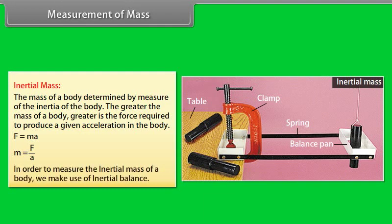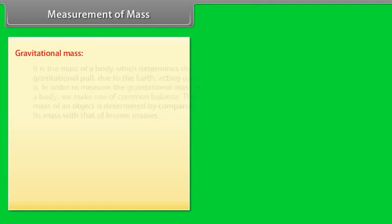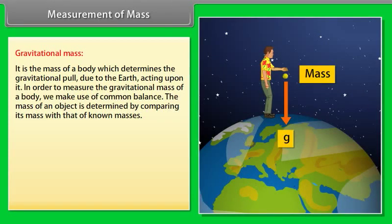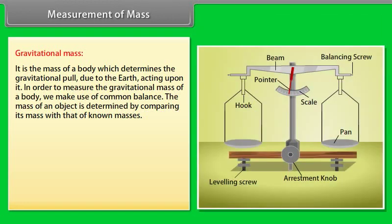Thus a very heavy body has a larger inertial mass than a light body. In order to measure the inertial mass of a body, we make use of inertial balance. Gravitational mass. It is the mass of a body which determines the gravitational pull due to the earth acting upon it.